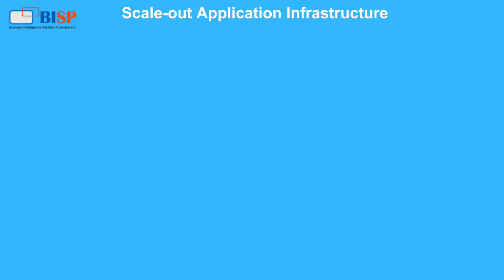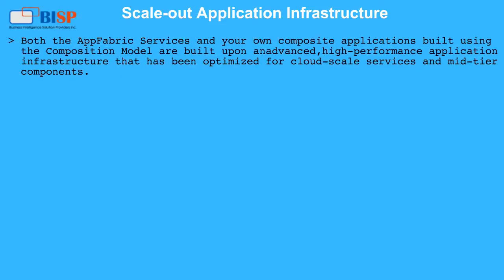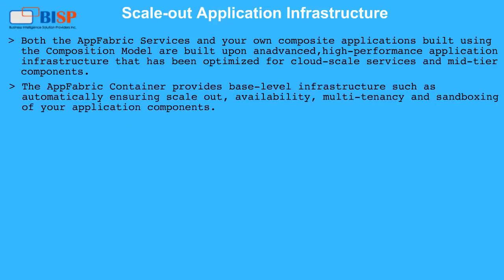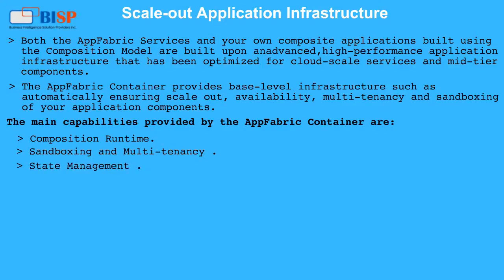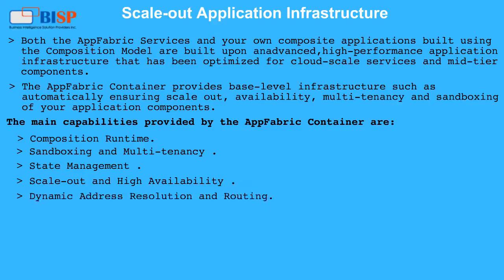Scale-out application infrastructure: Both the AppFabric services and your own composite applications built using the composition model are built upon an advanced, high-performance application infrastructure optimized for cloud-scale services and mid-tier components. The AppFabric container provides base-level infrastructure such as automatically ensuring scale-out, availability, multi-tenancy, and sandboxing of your application components. The main capabilities provided by the AppFabric container are: Composition runtime, Sandboxing and multi-tenancy, State management, Scale-out and high availability, and Dynamic address resolution and routing.